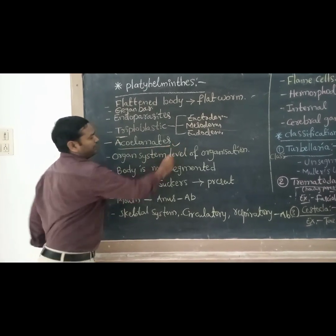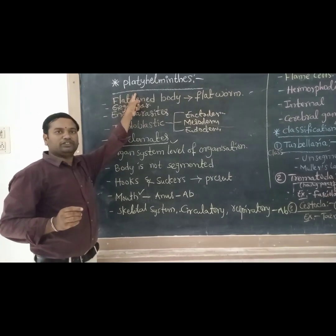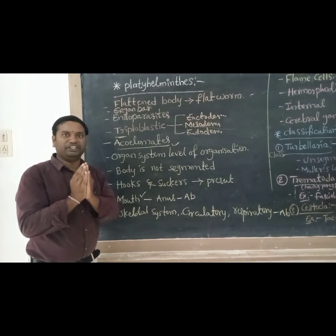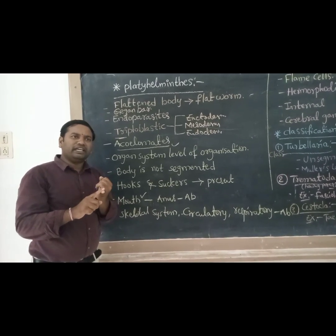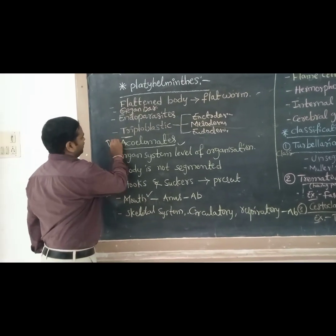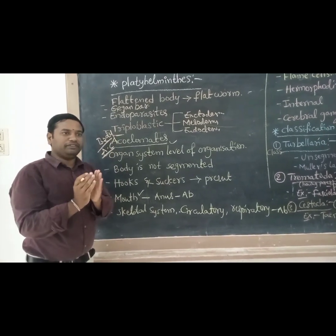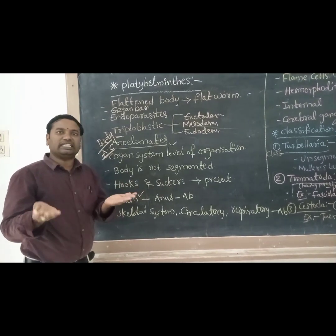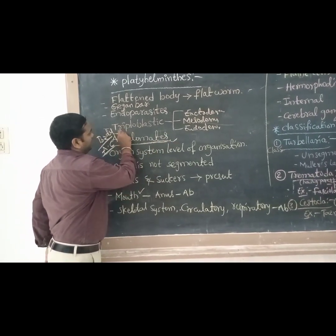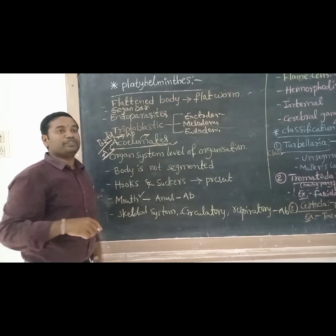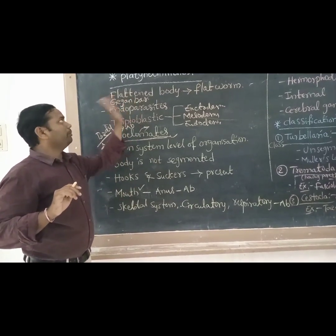Acoelomates — this is very, very important. First, the definition of coelom: coelom means the space between the body wall and the alimentary canal. But this group indicates acoelomates. 'A' means absent coelom. Absence of coelom is called acoelomate. Example: Platyhelminthes.